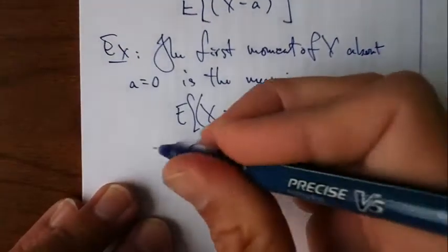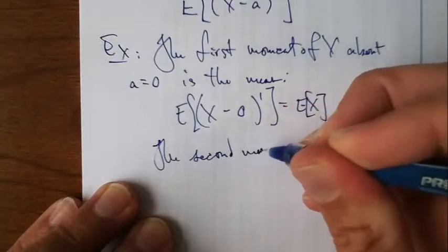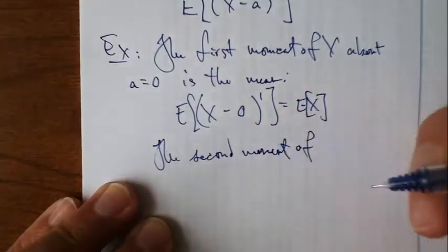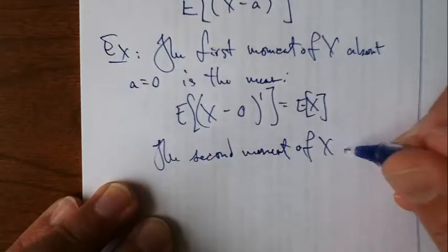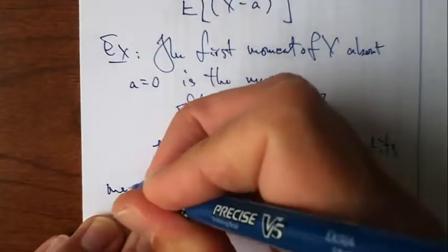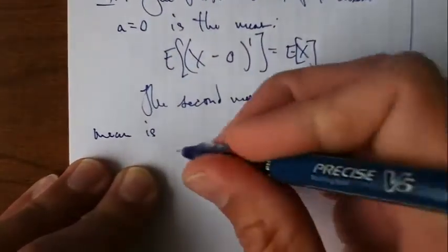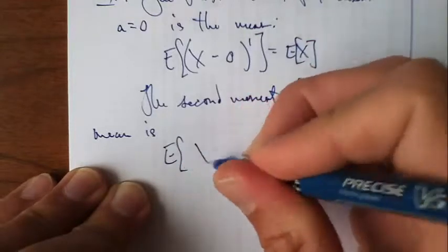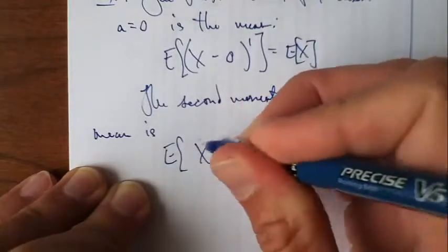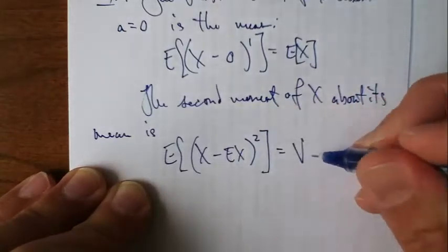Also, the second moment of X about its mean is expected value of, let's see, take X minus the mean of X, square that. Hey, that's just the variance.